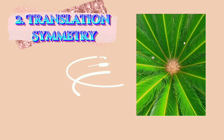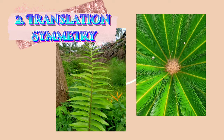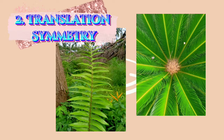Next is translation symmetry. It is when something has undergone a movement, a shift, or a slide in a specified direction through a specified distance without any rotation or reflection. The distances between points within the figure will not change, as well as its angle, size, and shape.